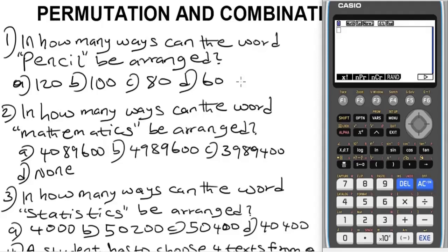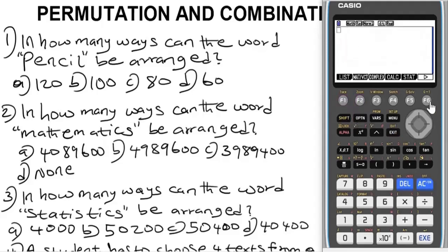Take note of this difference: permutation means distinct arrangements, whereas combination means choice or selection. Having known this difference, let's solve question 1. There are two ways you can solve it. The first way is to make use of permutation. For question 1, since the word has no duplicate letters, it is 5 permutation 5, which equals 120 ways.